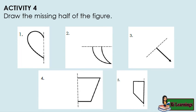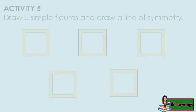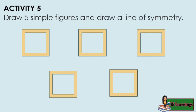Activity 4: Draw the missing half of the figure. Activity 5: Draw five simple figures and draw a line of symmetry.